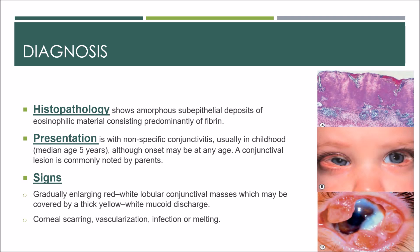Diagnosis on histopathology shows amorphous sub-epithelial deposits of eosinophilic material consisting predominantly of fibrin. This histopathological figure shows eosinophilic fibrinous coagulum on the surface of the conjunctiva. The red stain is eosinophilic, as we remember.